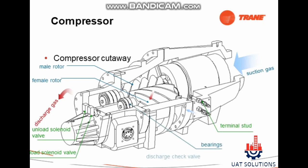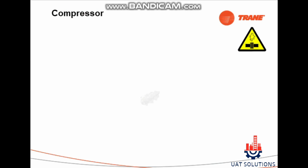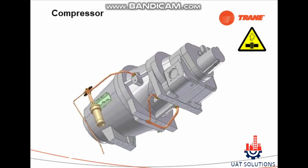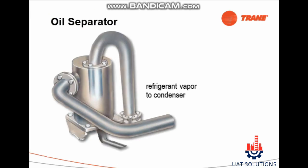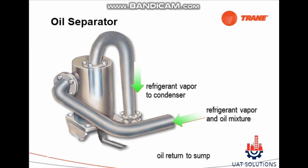Terminal stud, bearings, and discharge port are highlighted. Oil from the oil separator mixes with refrigerant reclaimed from the evaporator. Refrigerant vapor flows to the condenser, while the refrigerant vapor and oil mixture returns to the sump.